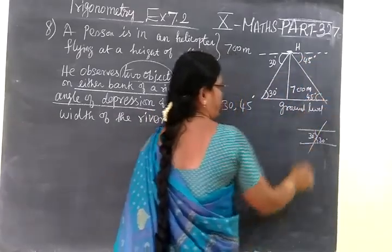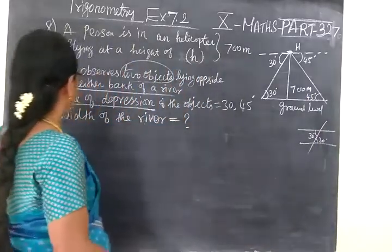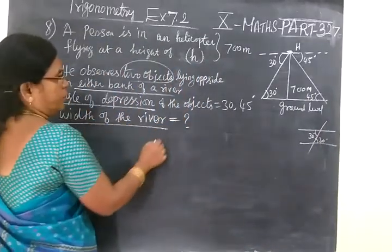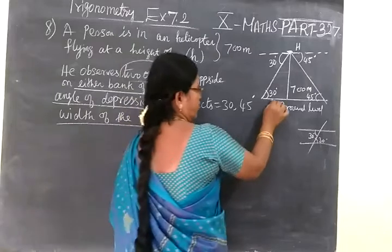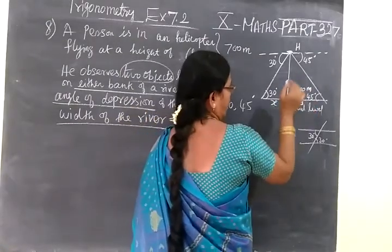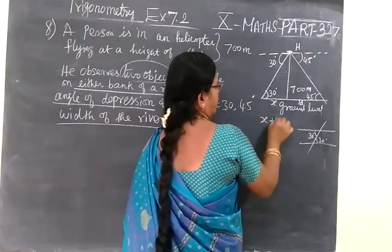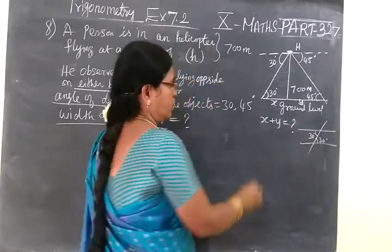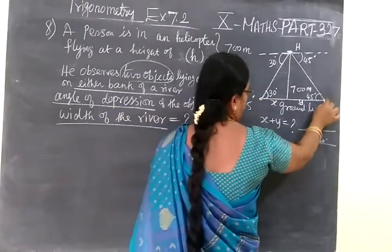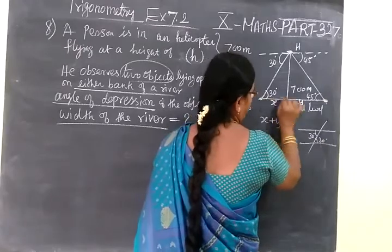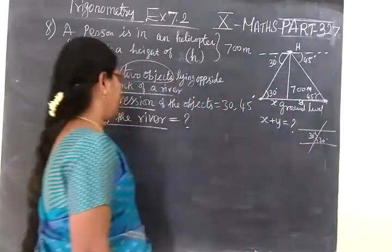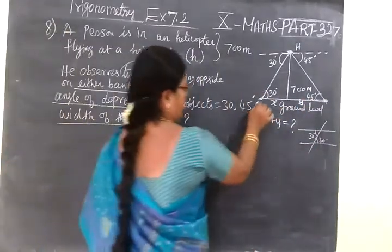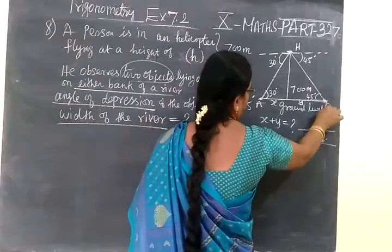So here also 45 degree. Now we have to find width of the river. Now suppose this is x and this is y. We have to find x plus y equal to question mark. This is one side of the river and this is other side. So width of the river. And the distance between this A and B we have to find.